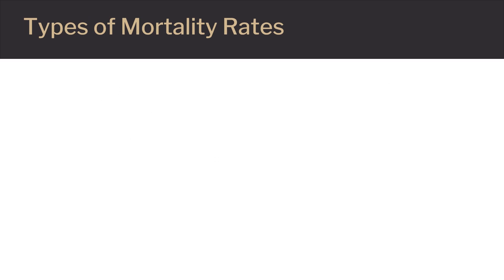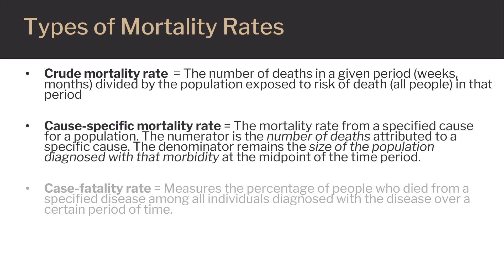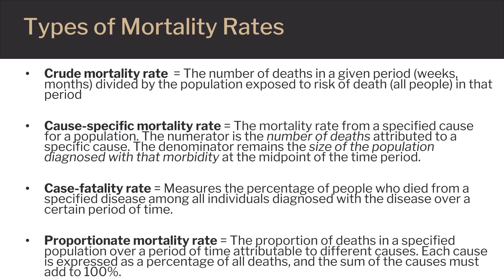This slide details the specific definitions of each of the four main types of mortality rate measures: crude, cause-specific, case fatality, and proportionate mortality. Each of these types of mortality rates are generally set up by placing the number of deaths in a population from a specific disease, or in total, in the numerator, and placing the amount of the population within a specific period of time in the denominator.